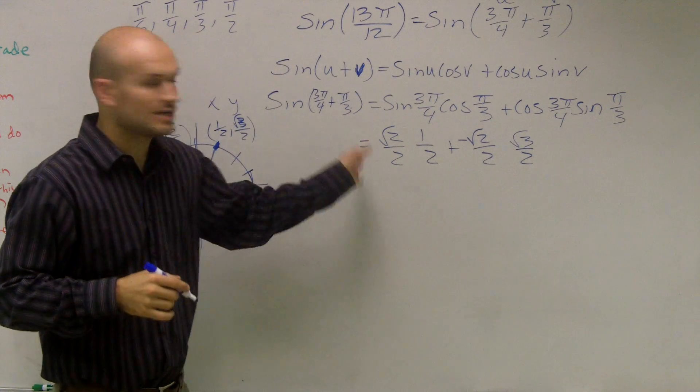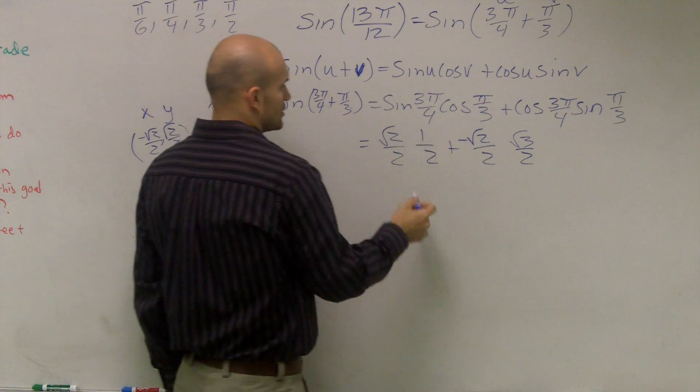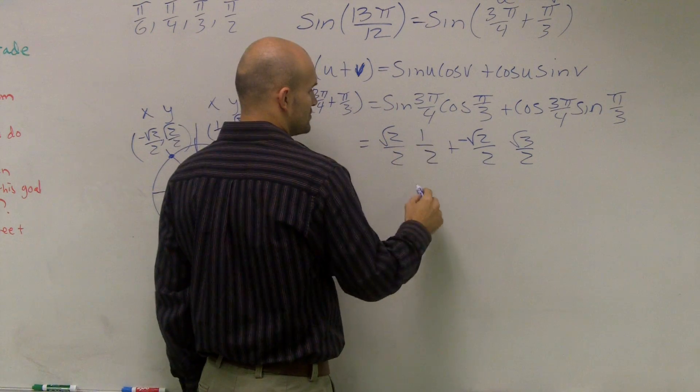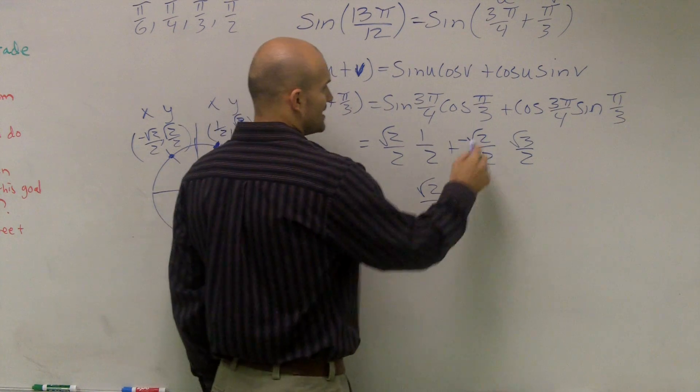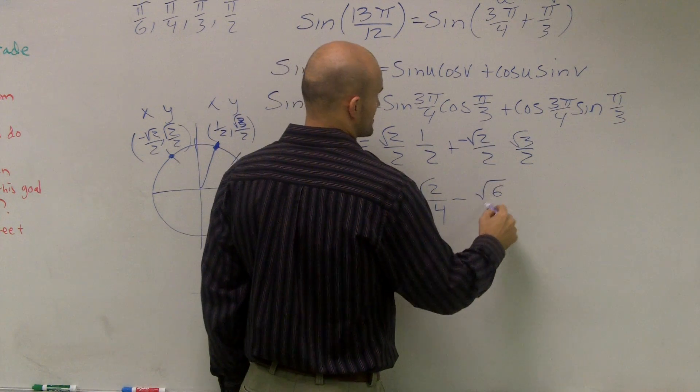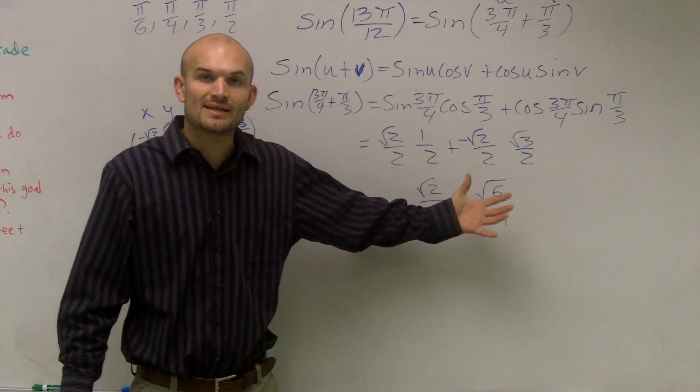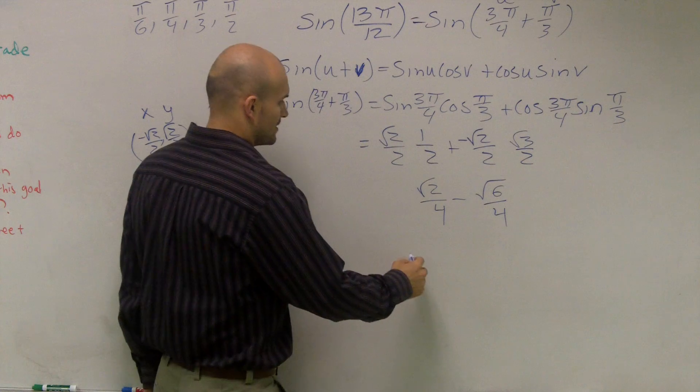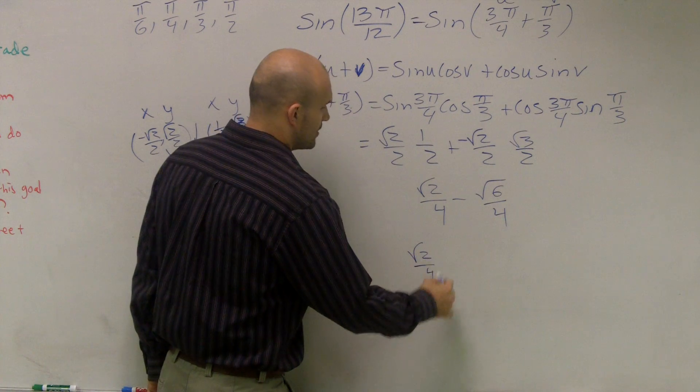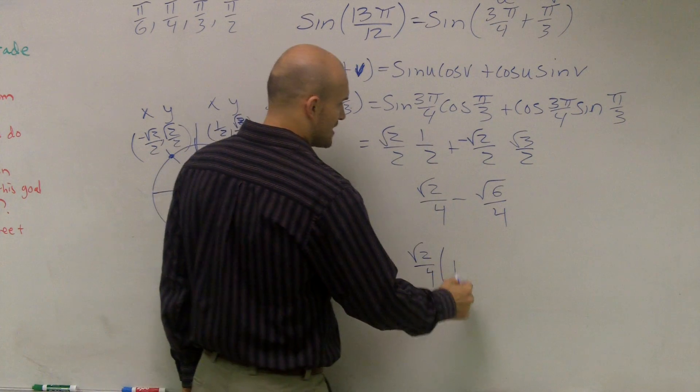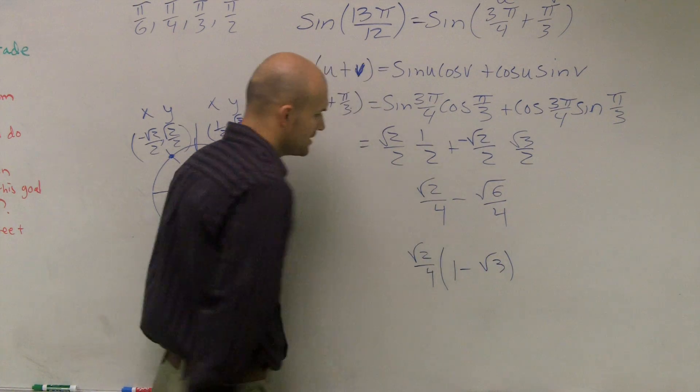And now simply all I need to do is just multiply across, square root of 2 times 1 is radical 2 over 4 minus radical 6 over 4. And then what you notice here is before I can combine these, I can actually factor out a radical 2 over 4. And what I'll be left with is a 1 minus radical 3.